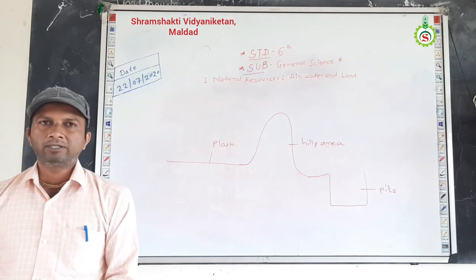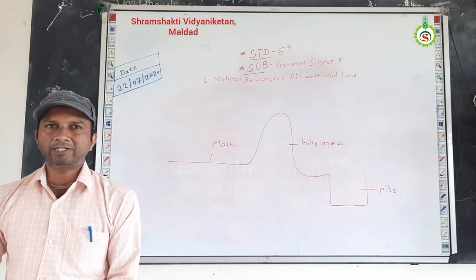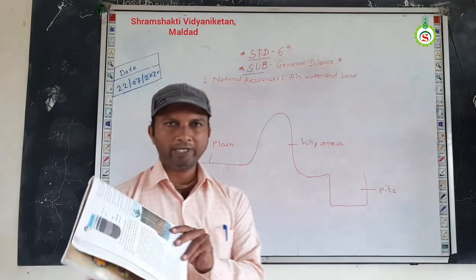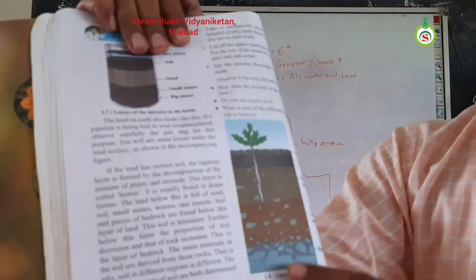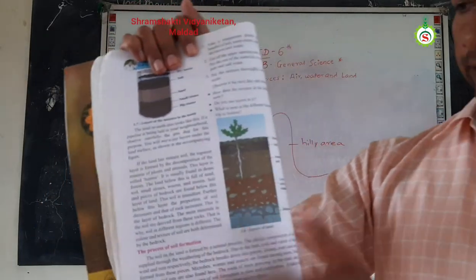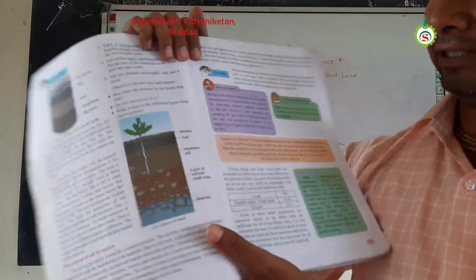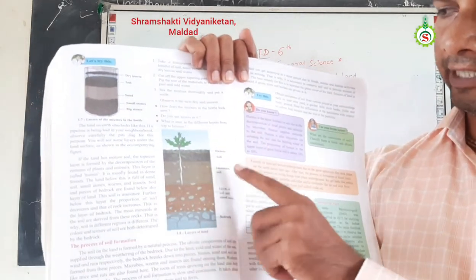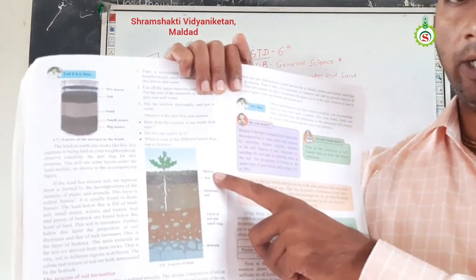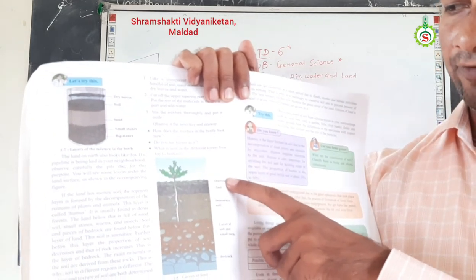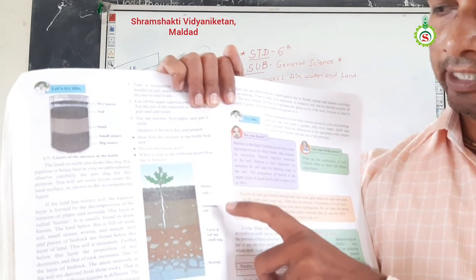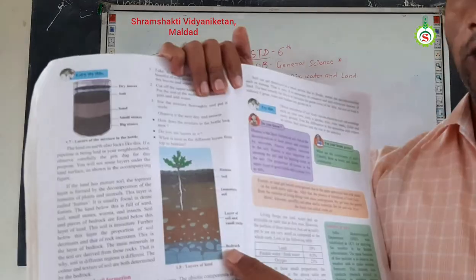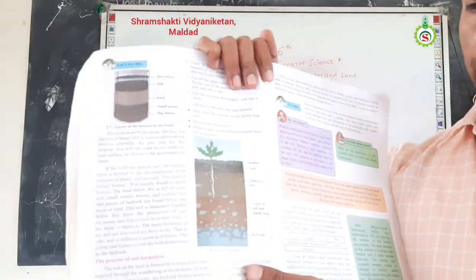Today I will give you information about how land is formed and which are the different layers of the land. On page number 6, a figure is given. When you see this diagram, you can observe different layers. There are different layers of the soil or land, namely: the humus layer or fertile layer, then soil, then immature soil, layers of soil and small rocks, and lastly the bedrocks.